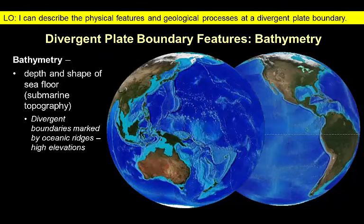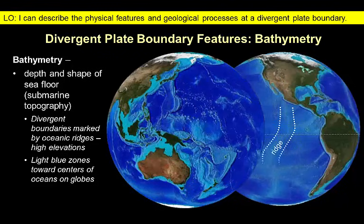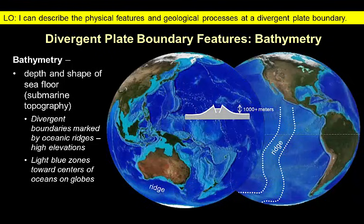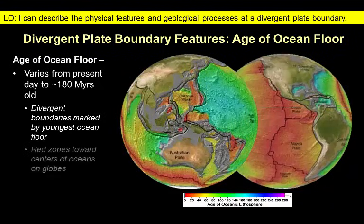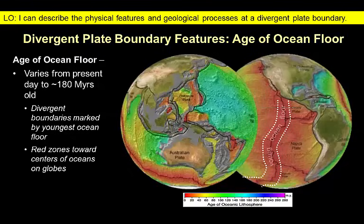Geoscientists use the term bathymetry to refer to the depth and topography of features on the ocean floor. Divergent plate boundaries are characterized by the presence of a continuous oceanic ridge that forms a submarine mountain range that can be traced through the major ocean basins. The ridge is typically more than a thousand meters higher than the surrounding seafloor. Observations of the ridge system reveal that it's a source of volcanic activity. Finally, divergent plate boundaries are where we find the youngest oceanic lithosphere, formed today as volcanic and plutonic igneous rocks. The age of the ocean floor gets progressively older moving away from the divergent boundary.